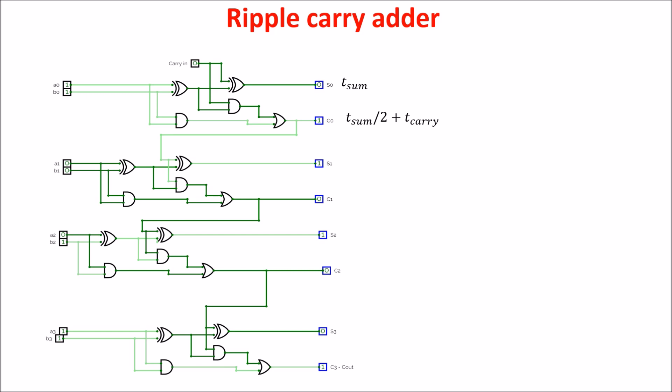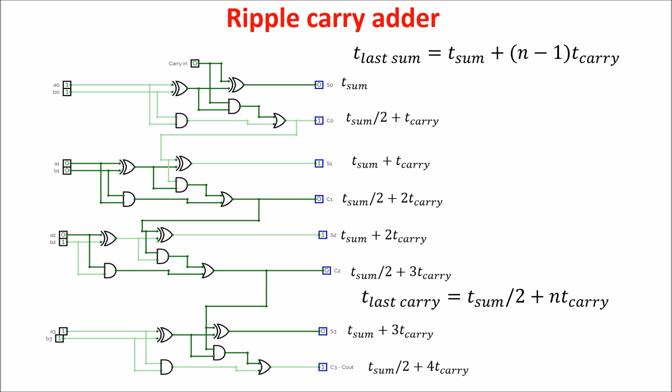For the second sum, we have to wait the previous carry, and then the XOR delay, so the second sum arrives after T sum plus T carry, and the second carry arrives after T sum over 2 plus 2 T carry. The third sum is this, and the third carry is this one, and so on. So, in general, the last sum comes after T sum plus N minus 1 times T carry, and the last carry comes after T sum over 2 plus N times T carry. So, we see for both sum and carry, the problem is the carry propagation delay, which must pass through N or N minus 1 stages.